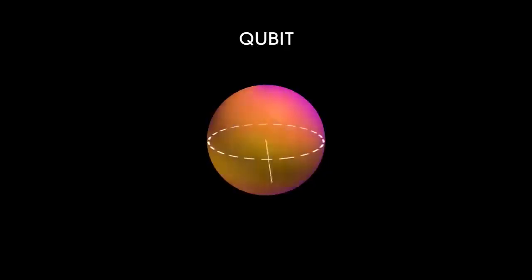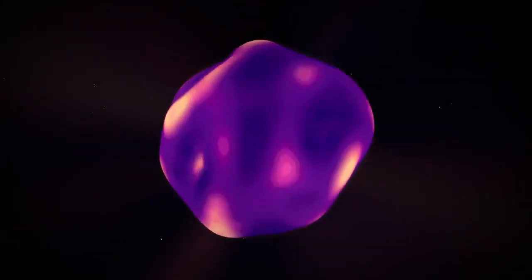But quantum computers are different. They use qubits instead of bits. Qubits are based on the principles of quantum mechanics, which tell us that particles can exist in multiple states at the same time. This means that a qubit can represent not just a zero or a one, but a combination of both at the same time. This is called superposition.